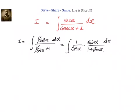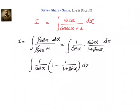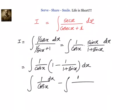We will write sin x by 1 plus sin x as 1 minus 1 by 1 plus sin x. So it will become integral of 1 by cos x into 1 minus 1 by 1 plus sin x dx. The next step will be, we can separate them now.